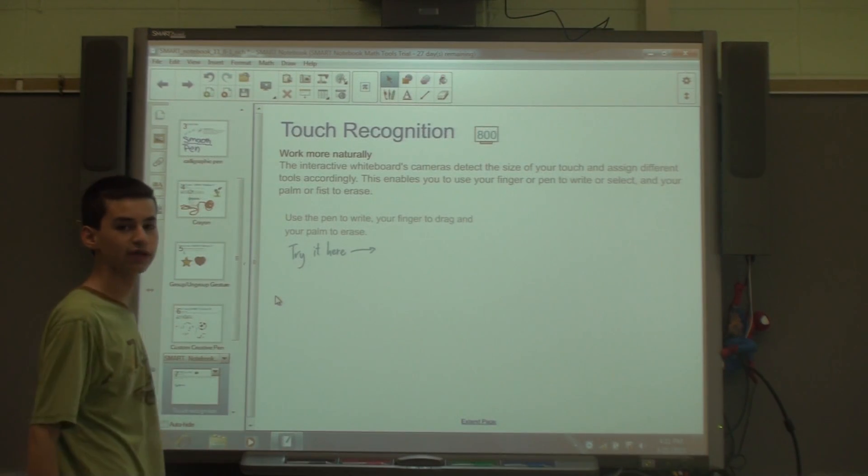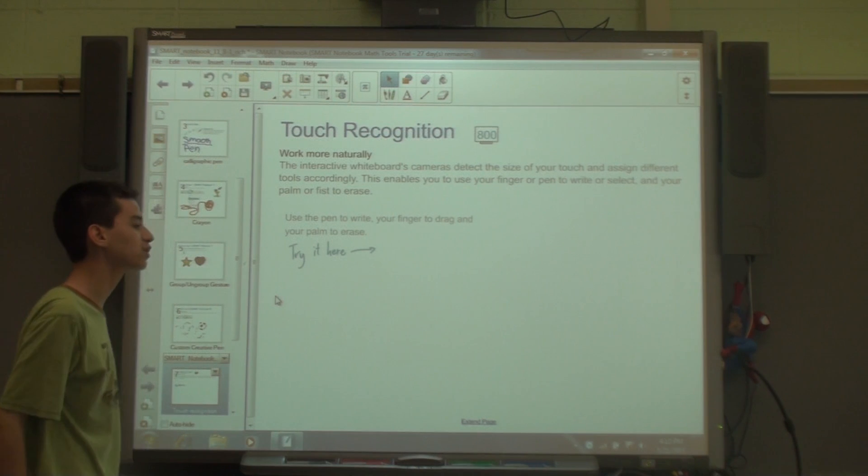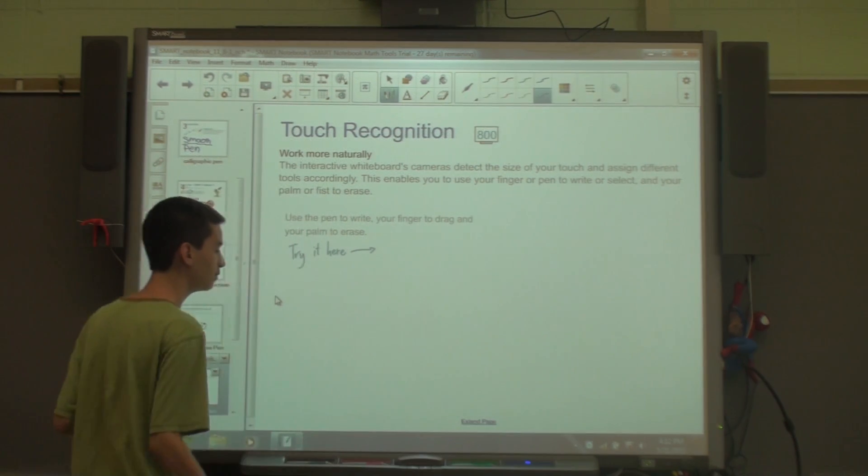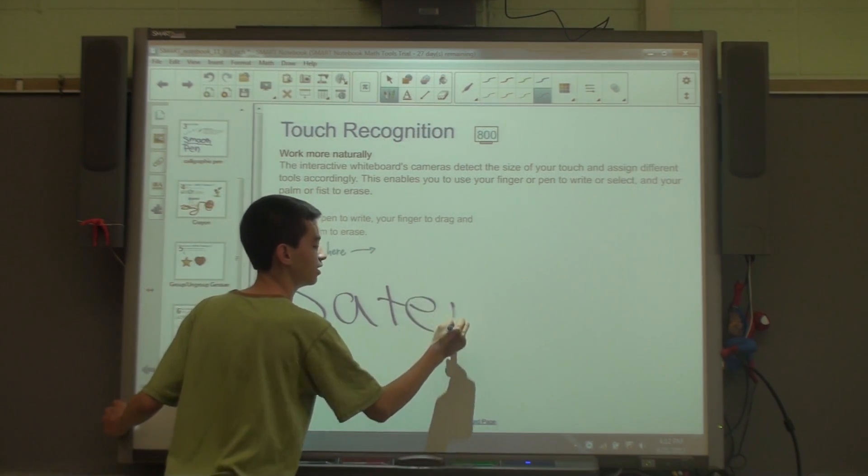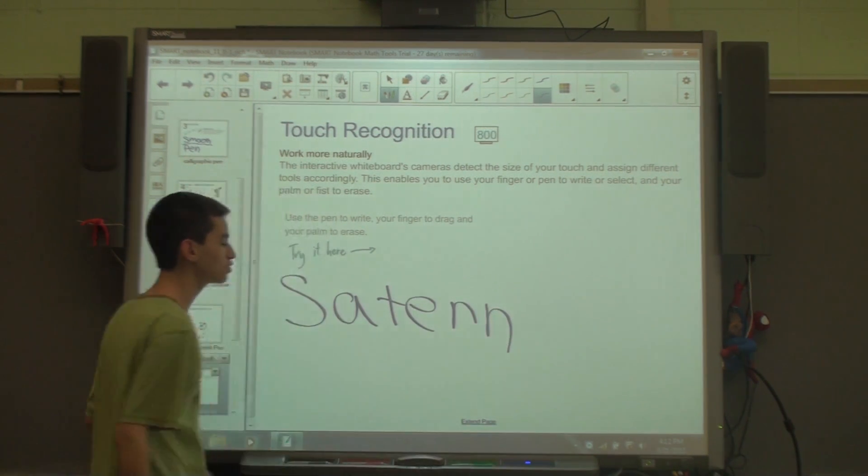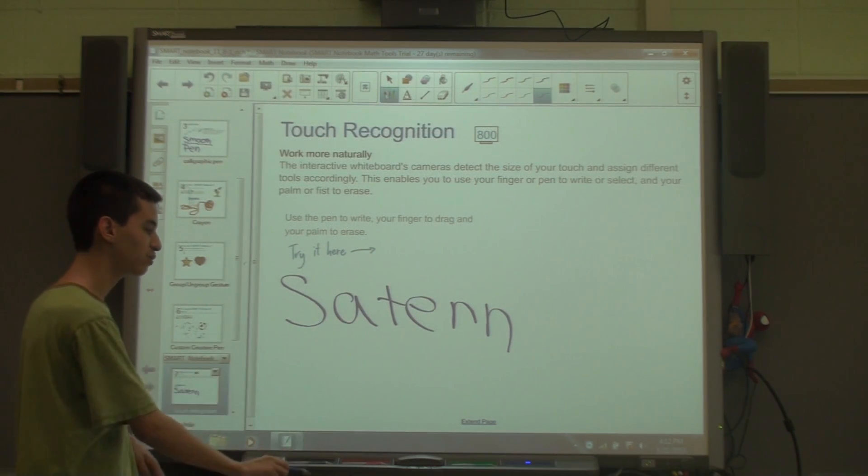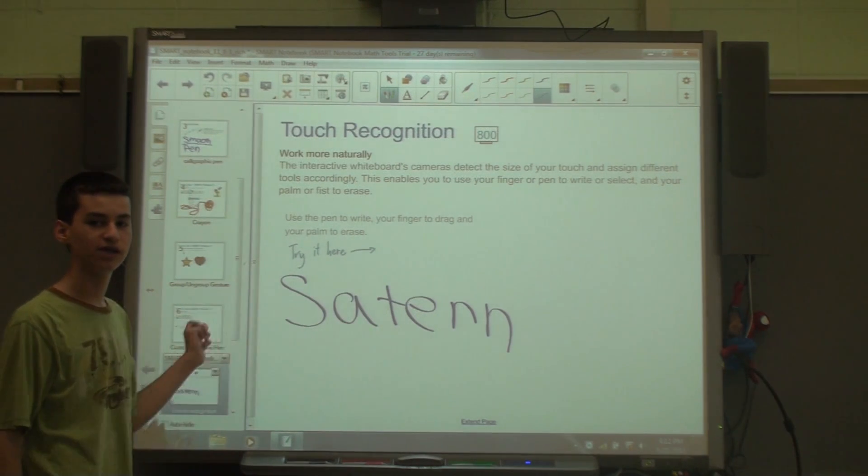Next is touch recognition. Touch recognition only works on Smart Board Interactive Whiteboards. What it allows you to do is if I pick up a pen, I'm going to write Saturn. Now usually whenever you write a word, you have to put down your pen to move an object or pick up the eraser to erase it.